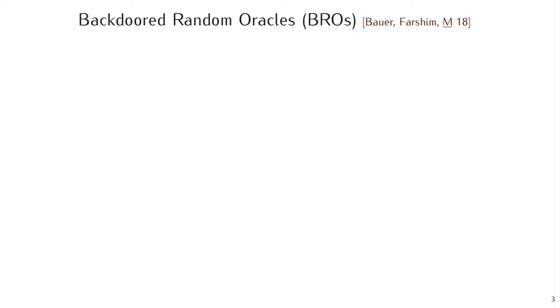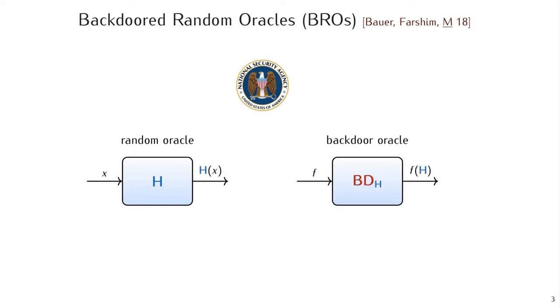In the BROS model, a hash function is basically a random oracle, which means a perfectly random function. But to capture backdoors, we assume that such a hash function H is designed by a malicious authority together with another interface, which is an adversarial interface called the backdoor oracle. This backdoor oracle can be queried on functions F and it returns the output of F on the entire description of the hash function H.